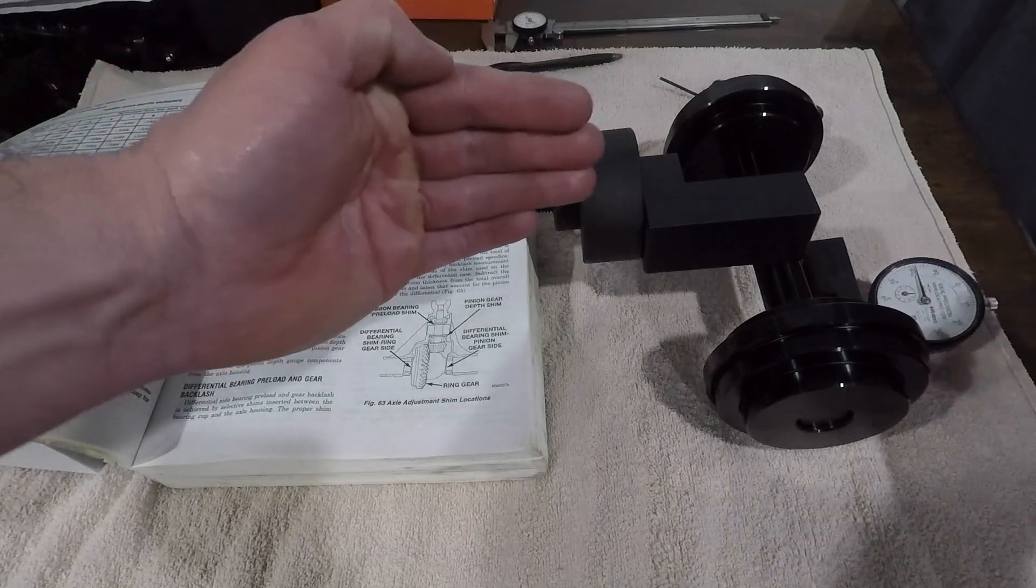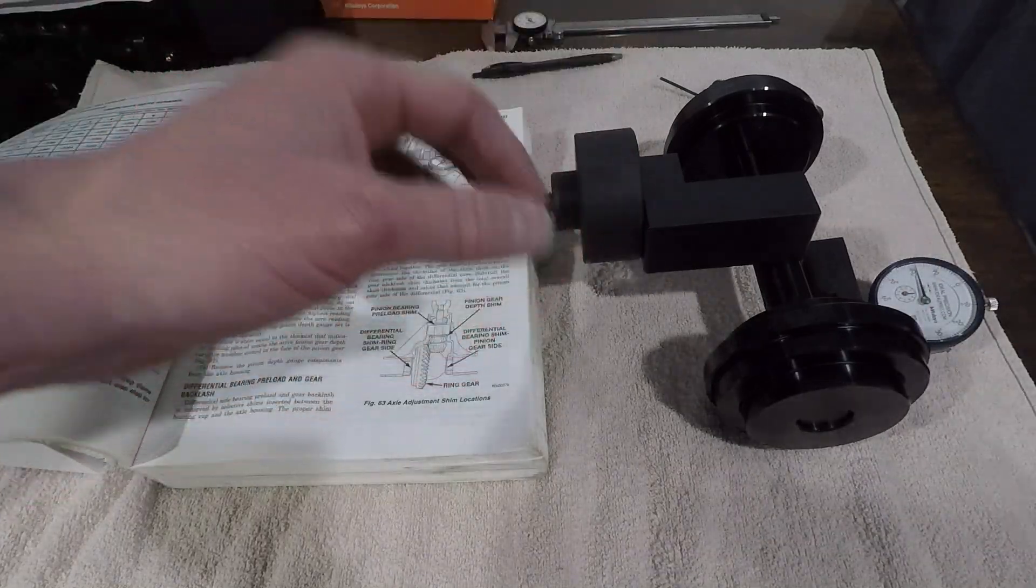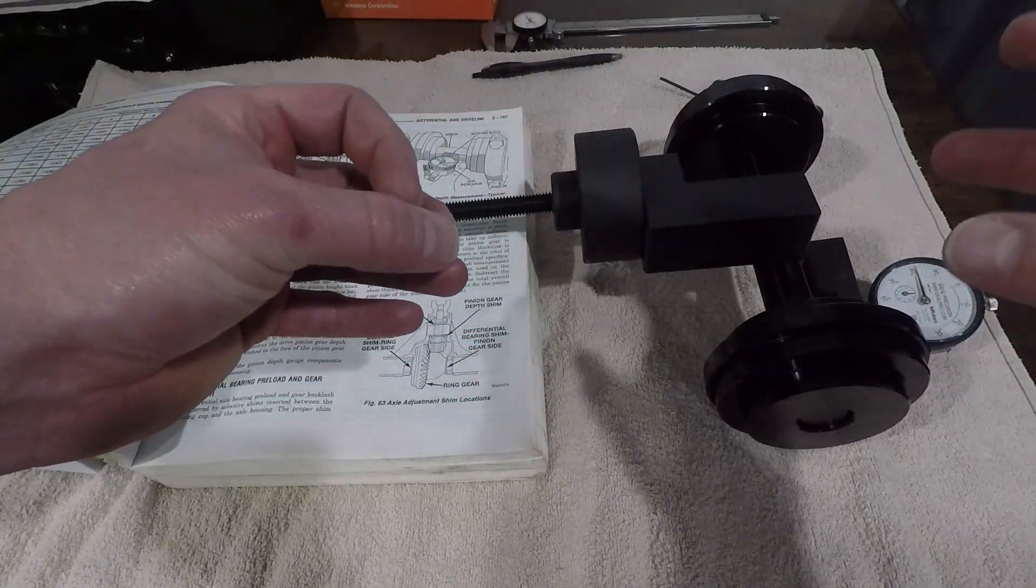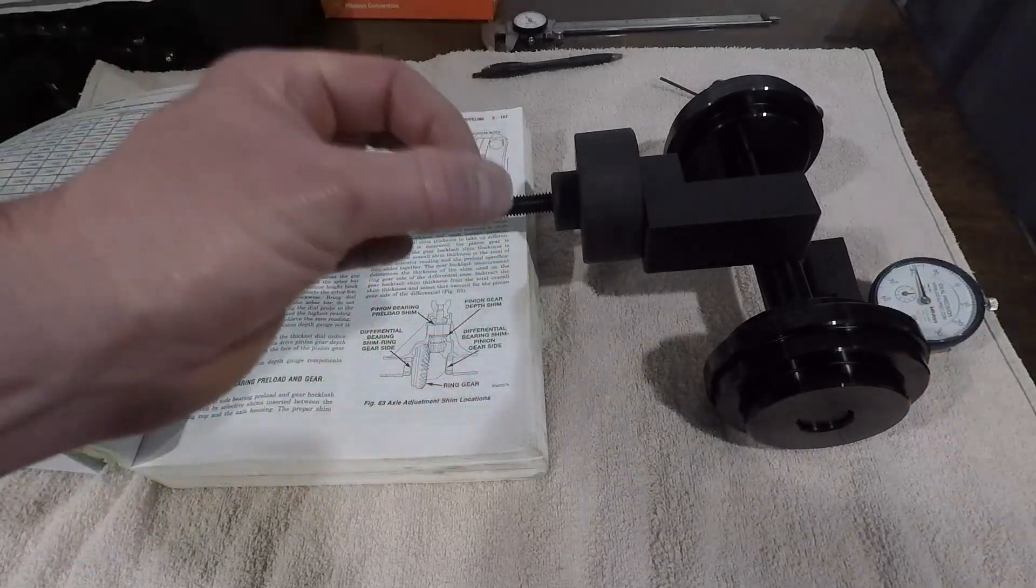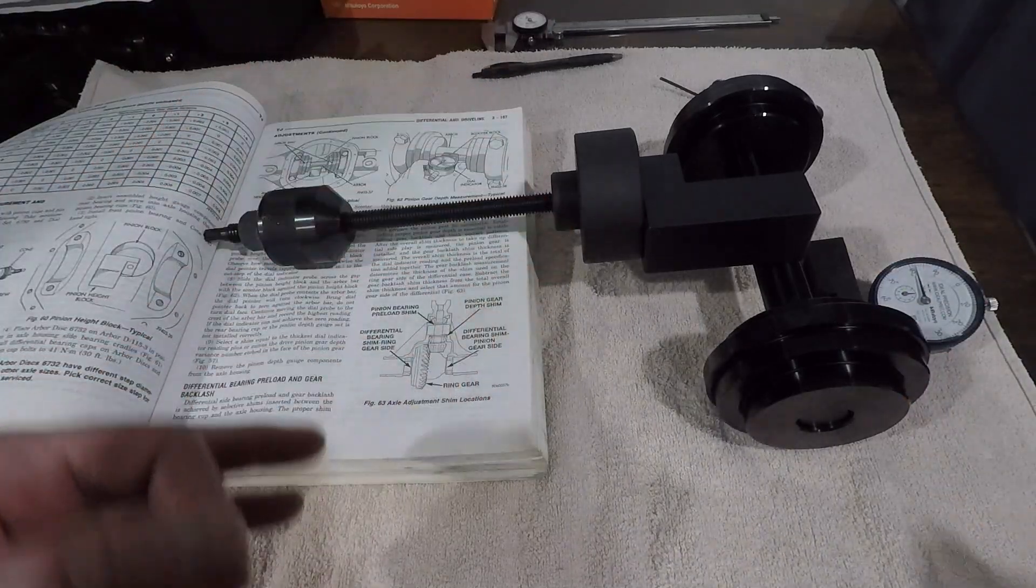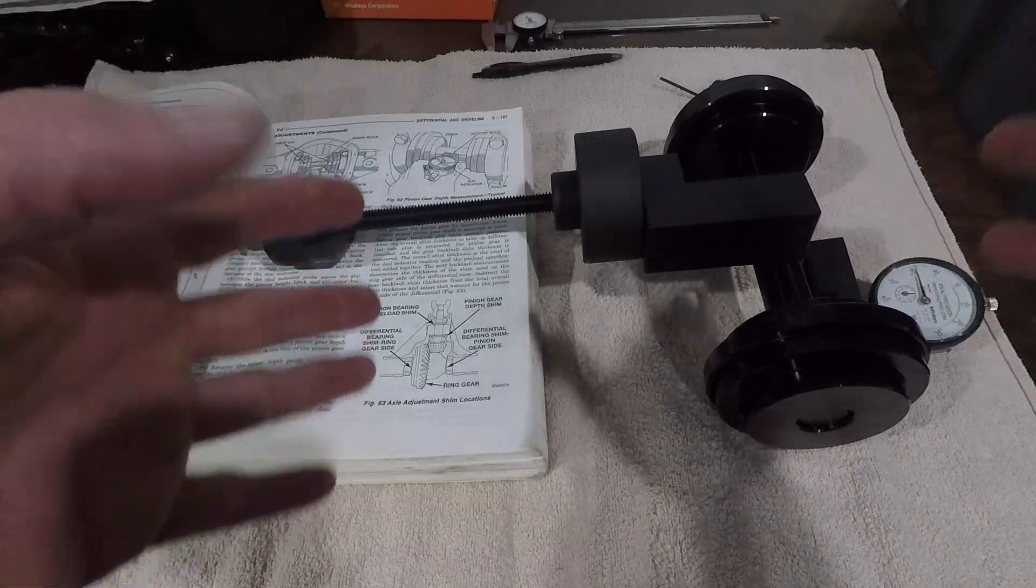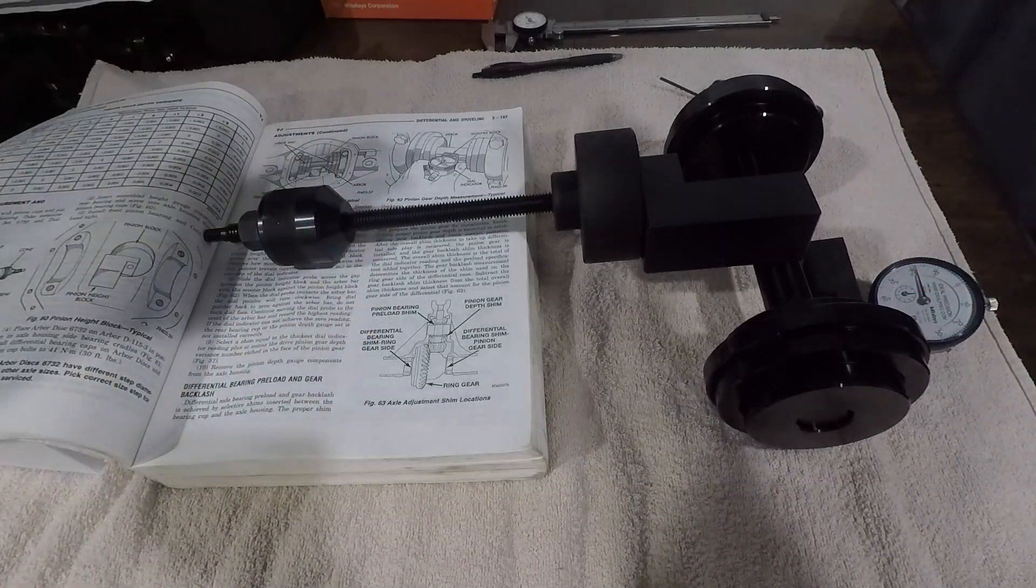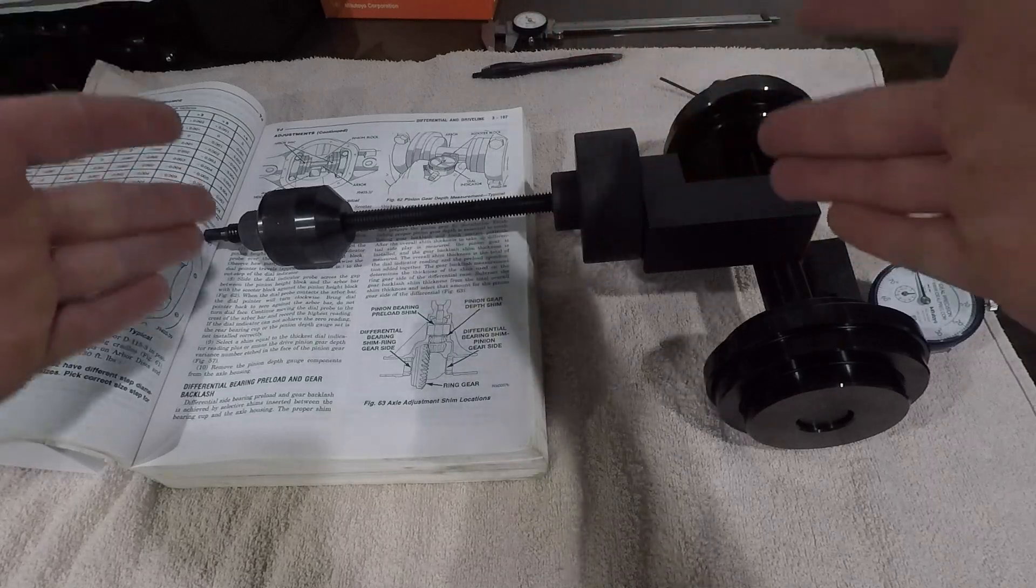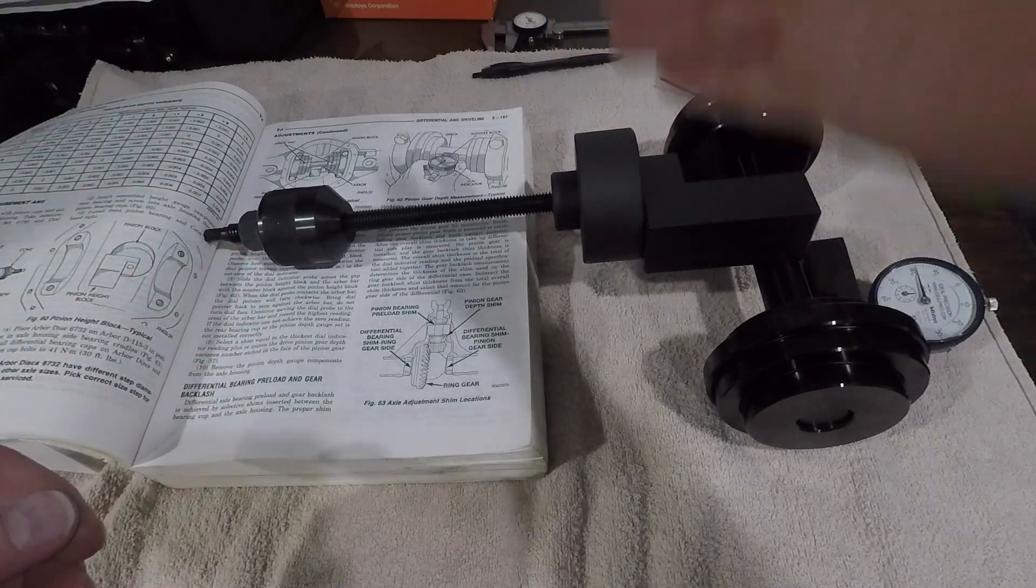And it will give you your perfect pinion depth. From my understanding this device puts it either dead on and if it's not dead on it's within a thousandth of an inch. What's great about this tool is every single axle housing is completely different. You can build 20 of these housings on the same assembly line and every single axle housing will be slightly different.